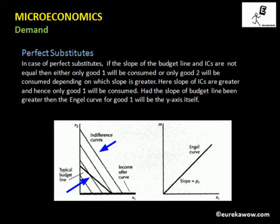If the slope of the indifference curves is smaller than the slope of the budget line, then the consumer will consume only good two. In that case, the Engel curve for good one will be a vertical line coinciding with the y-axis — as income increases, x1 remains at zero.